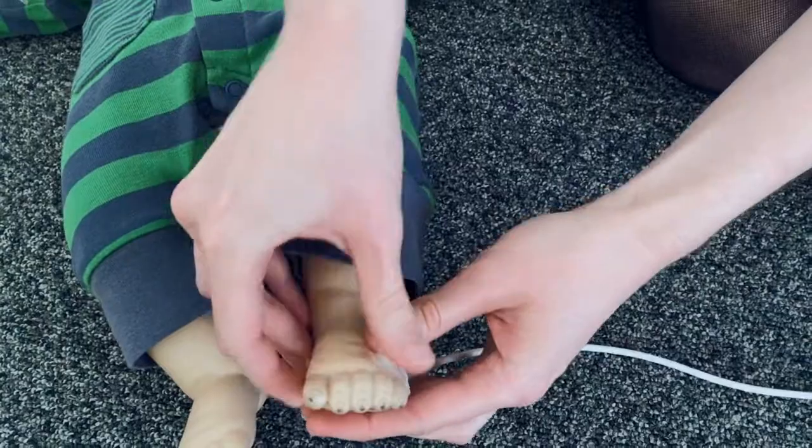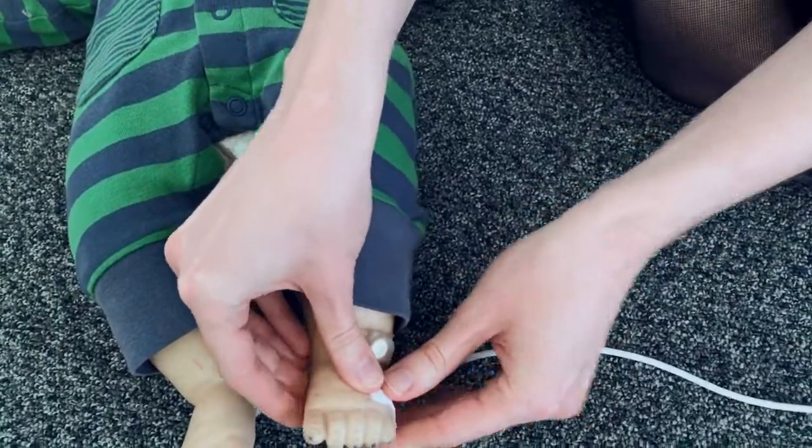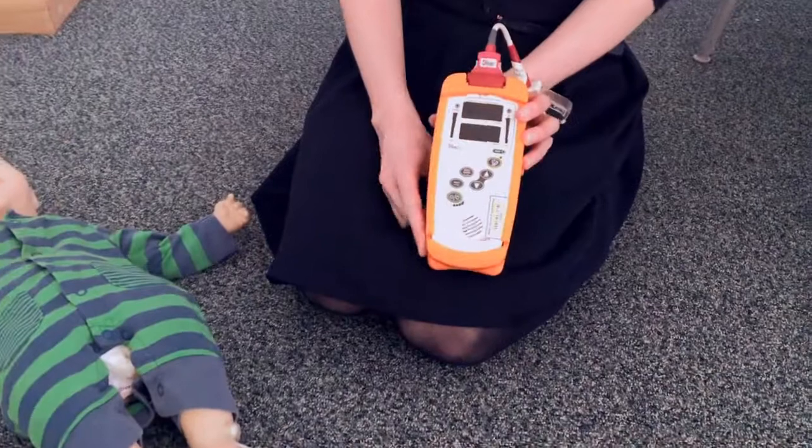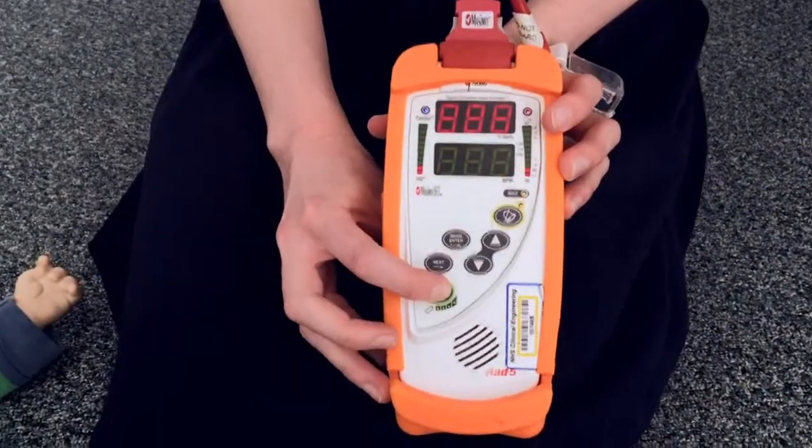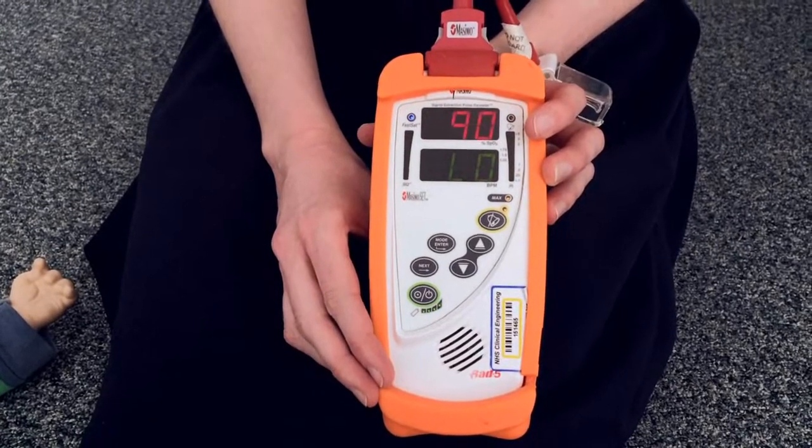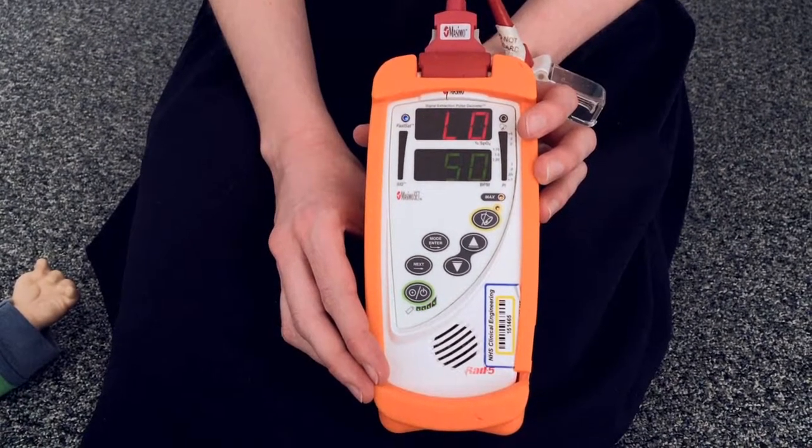Once the probe is attached to your baby, take the saturation monitor and turn it on by pressing the green button. Hold it until the numbers appear, then let go and wait for the display to load.